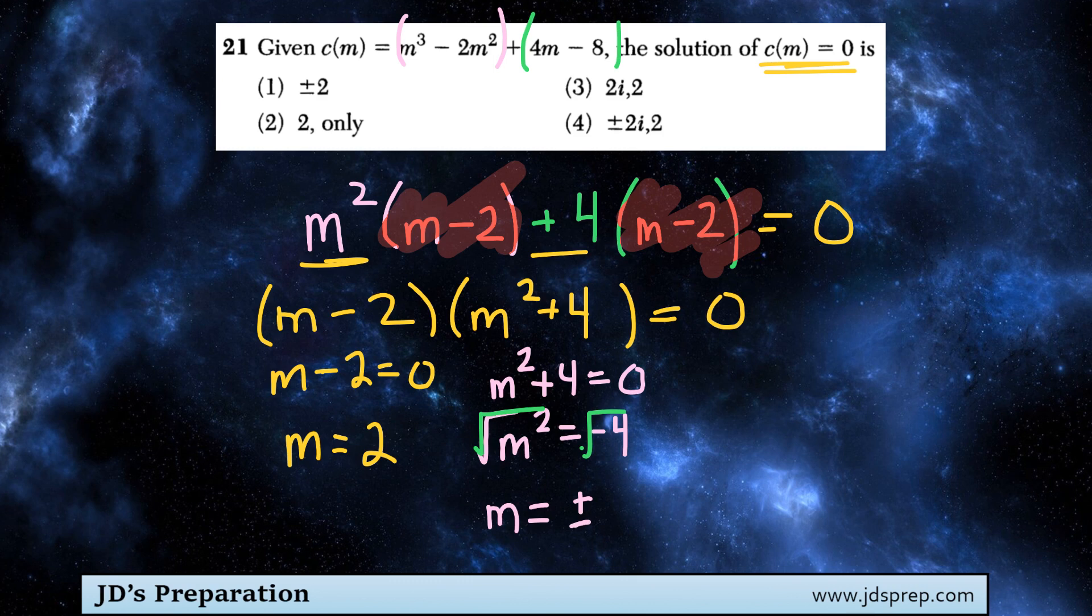Now, since it is a negative number, this is going to involve imaginary numbers. It's going to be 2i. i because it's negative, and 2 because, well, the square root of 4 is 2.